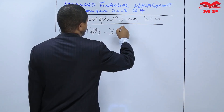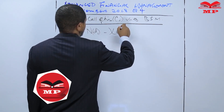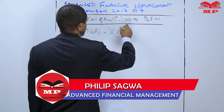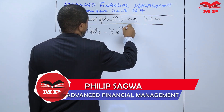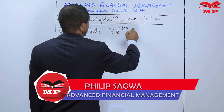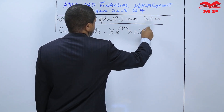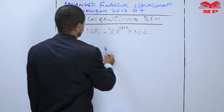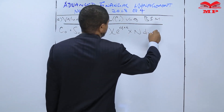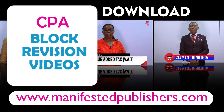Times exponential of risk-free rate times time, times the natural log of D — this is D1, D2, D2.